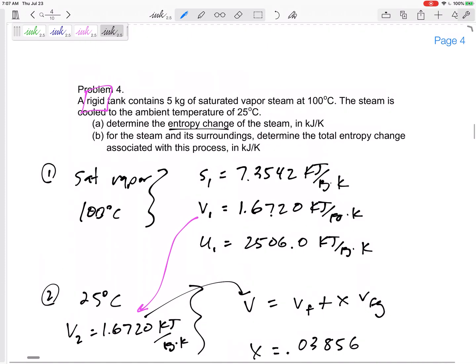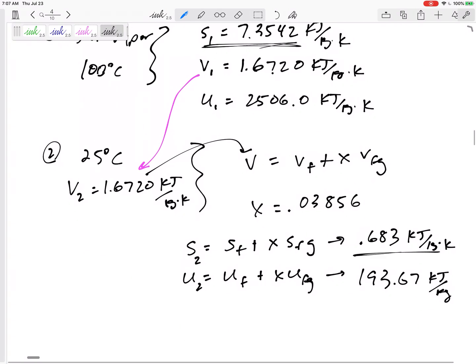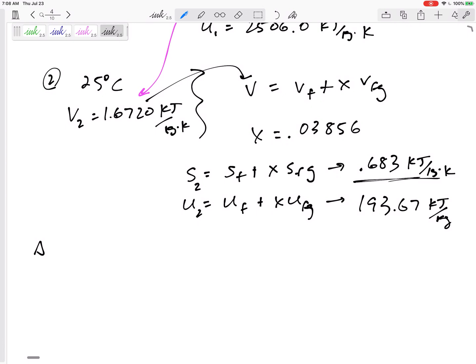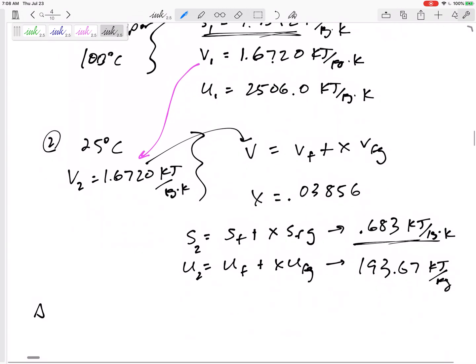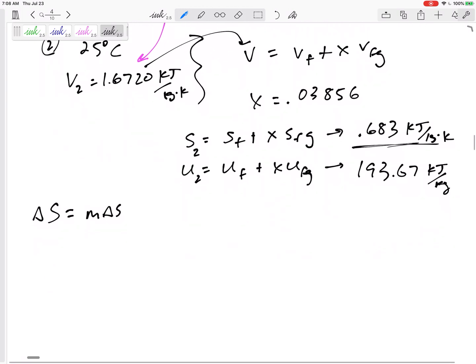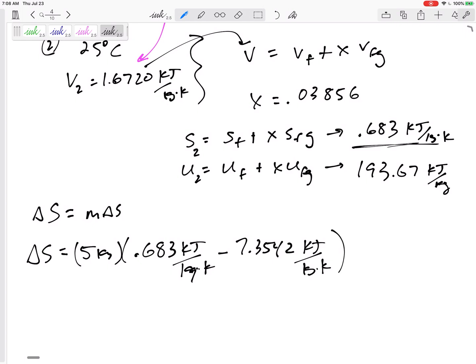I'm using it to find the entropy: 0.683 kilojoules per kilogram K, and also finding U: 193.67 kilojoules per kilogram. What was I trying to do? Entropy change. That's why I found the initial entropy, that's why I found the final entropy. The entropy change, delta S - our units help us out - this is the total, capital S: that's mass times delta lowercase s. The mass was five kilograms, S2 is 0.683 kilojoules per kilogram K minus S1, 7.3542 kilojoules per kilogram K. This is negative 33.36 kilojoules per K.